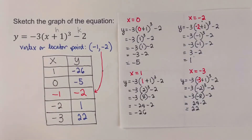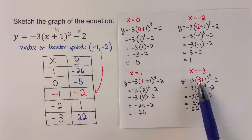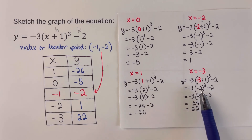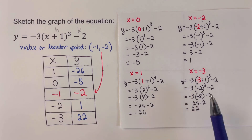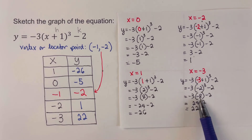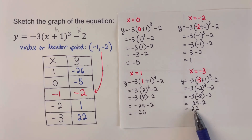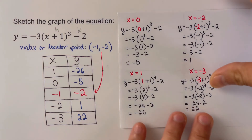For x equals negative 3: negative 3 plus 1 is negative 2, negative 2 cubed equals negative 8, negative 8 times negative 3 is positive 24, and positive 24 minus 2 is 22. So y equals 22 when x is negative 3. For x equals 1, we also calculate the corresponding y-value.